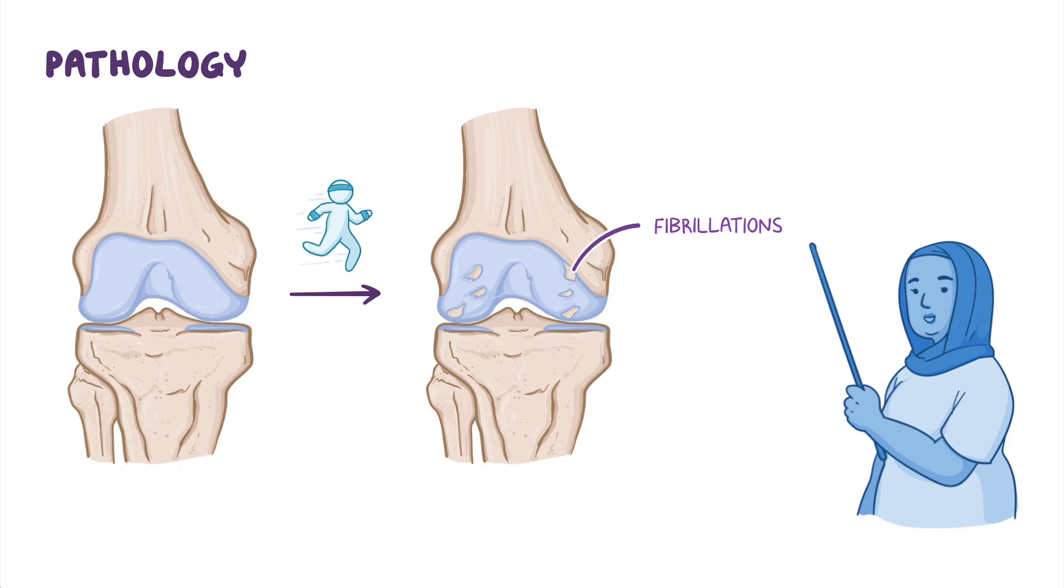So, over time, the cartilage will continue to erode away until the underlying bones are exposed, allowing them to rub against each other. At the same time, on the joint edges, bone reacts by growing outward at the margins, forming what's called osteophytes, or bony spurs.